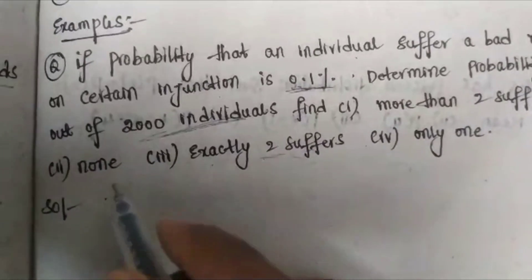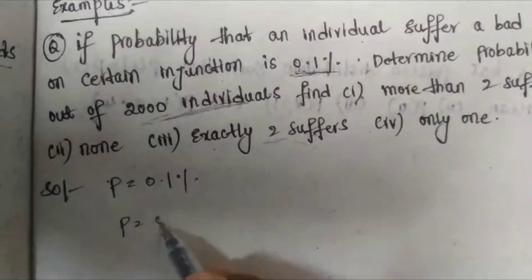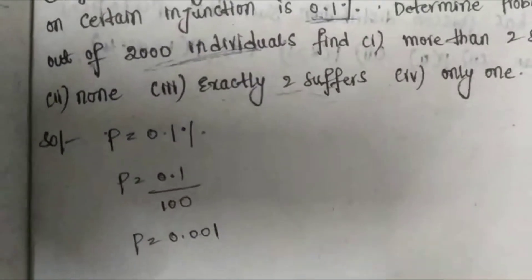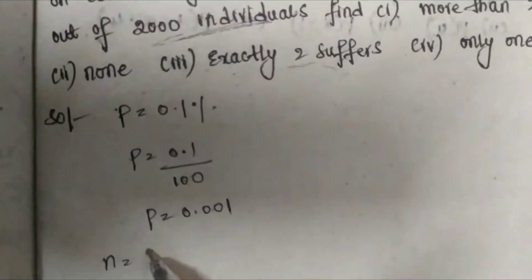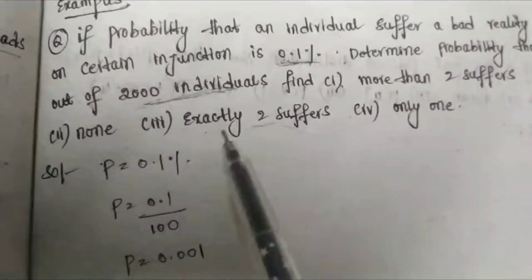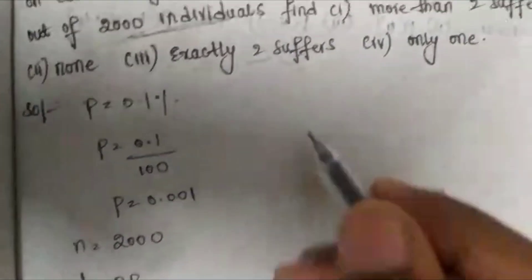Given: p = 0.1% = 0.1/100 = 0.001, and n = 2000 individuals. The lambda value is not directly given, so we find it: λ = n × p = 2000 × 0.001 = 2. Wait — calculating: 2000 × 0.1/100 gives us λ = 0.2.